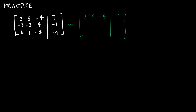I want my first row to remain the same because I want this 3 to be a pivot. I'm going to add rows 1 and 2 to give me my new row 2, which gives me 0, 3, 0, 6. I'm going to take negative 2 times row 1 and add it to row 3 to give me 0, negative 9, 0, negative 18.